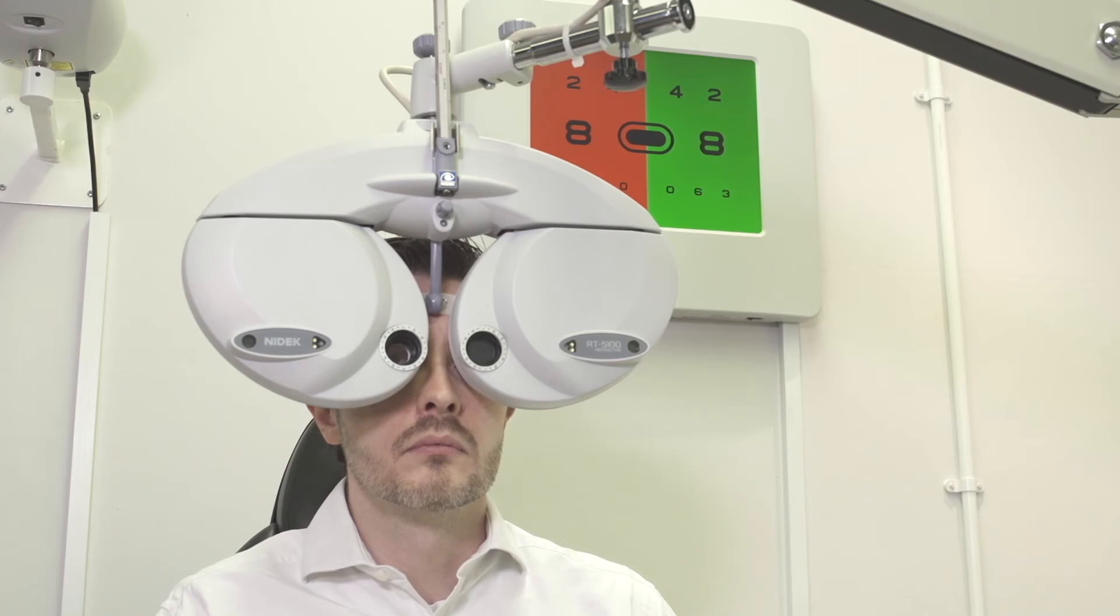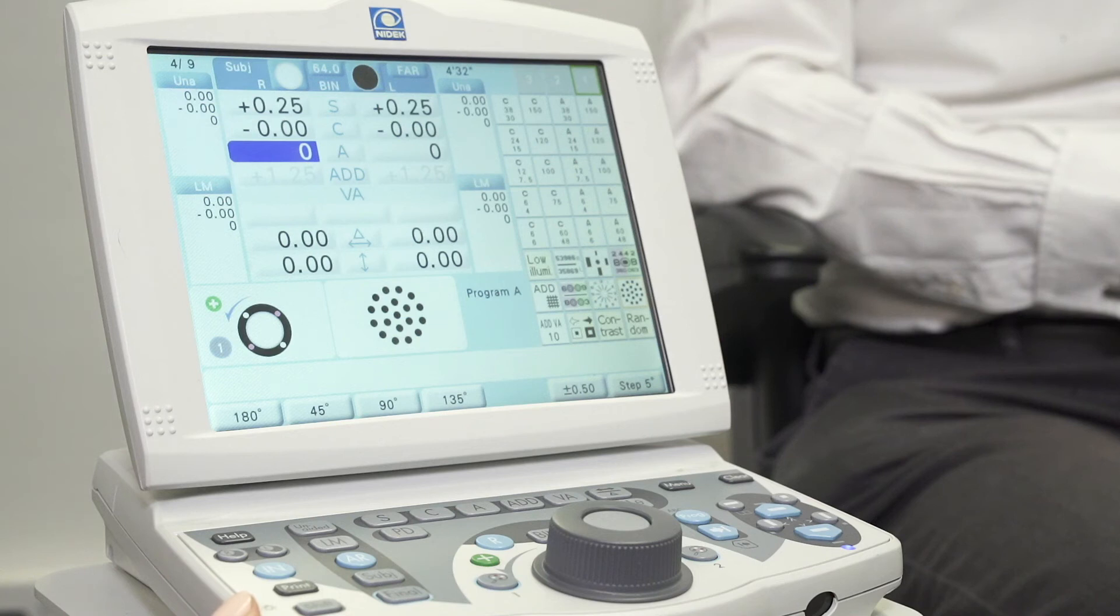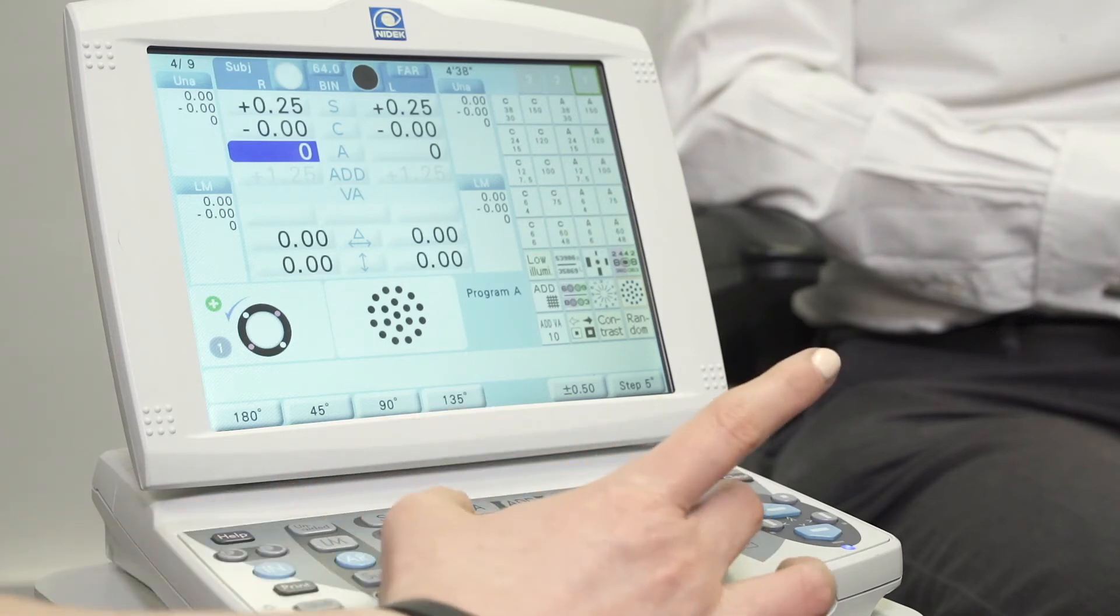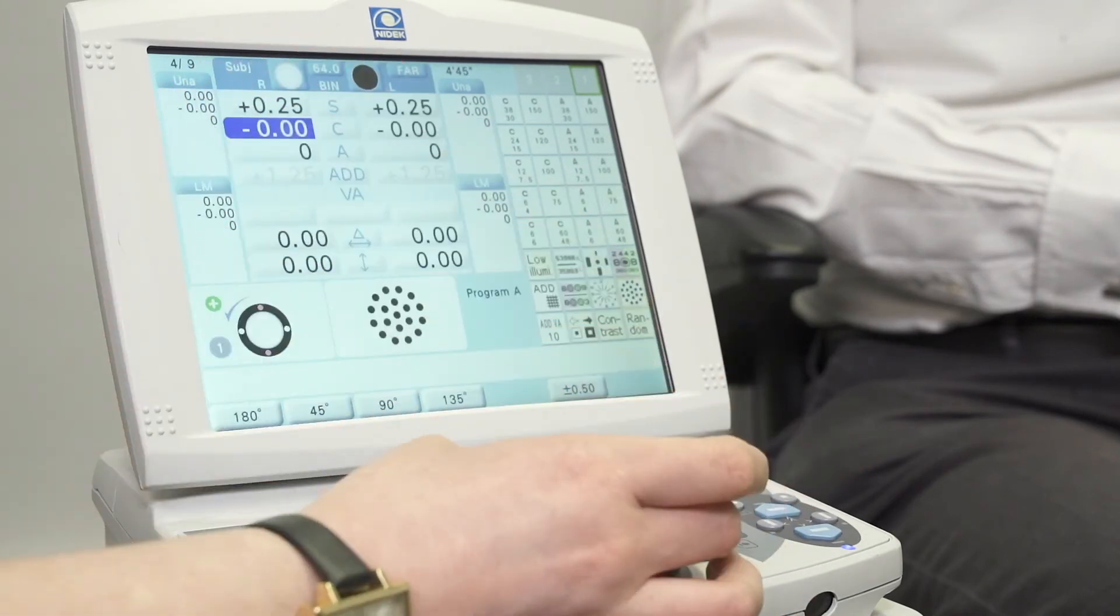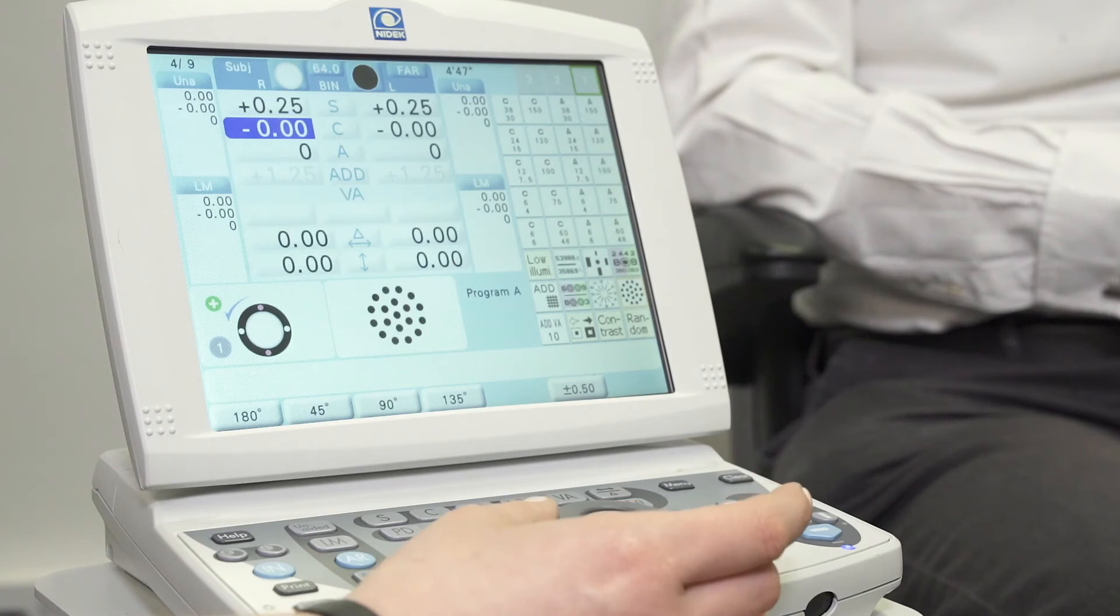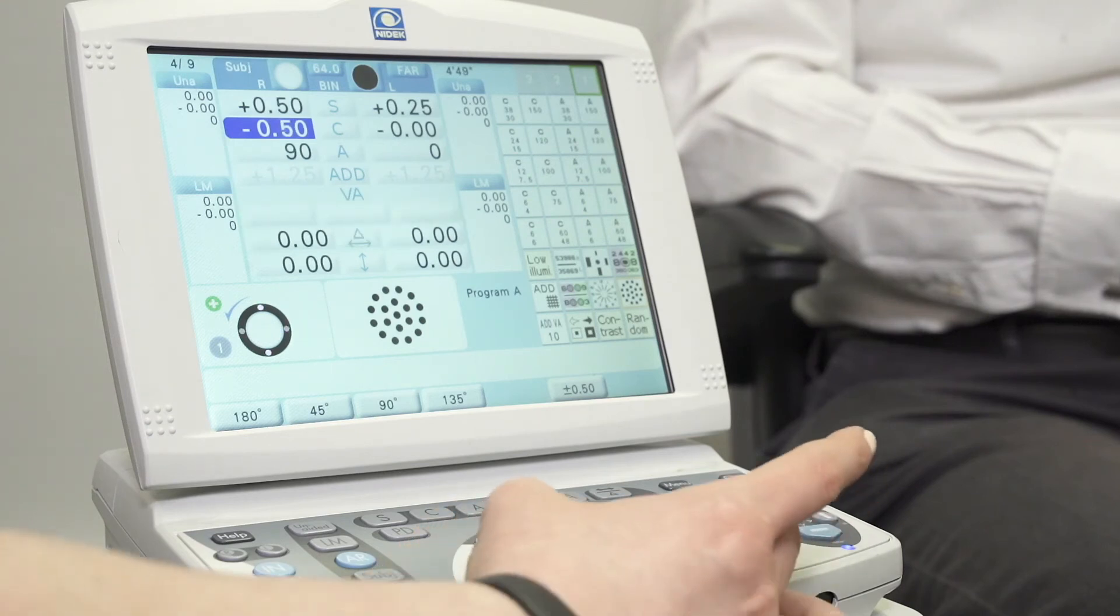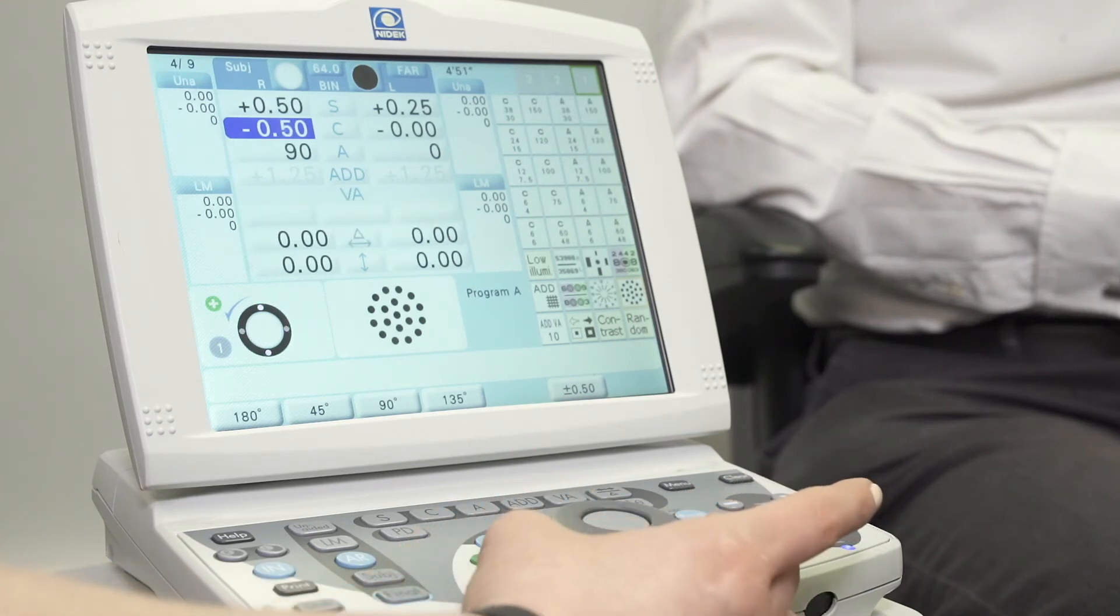Once we're happy, we'll move on to the cross cylinder technique. Starting off by trying to refine the axis, we're asking the patient whether the dots appear rounder and darker or clearer with option number one or option number two. Once we're happy, we can move on to refine the power in the same way, either by using the dial or by using the two options just here.